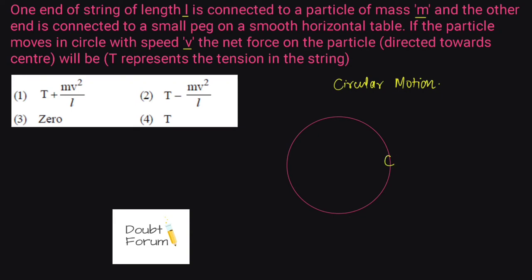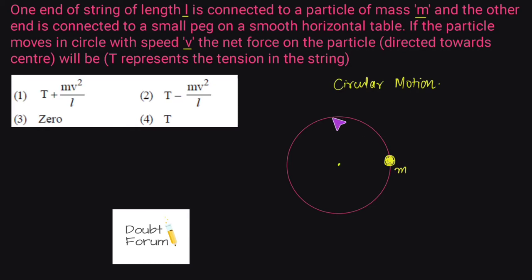Let's consider there is an object of mass M moving along the circumference of this circle — that is circular motion. Now there is a prime requirement for any object to move along the circumference or move in a circular path: there has to be a net force directed towards the center of the path. Because this is a circular path, it will definitely have a center. We call this force the centripetal force, and it is the prime requirement for any object to move along the circular path.